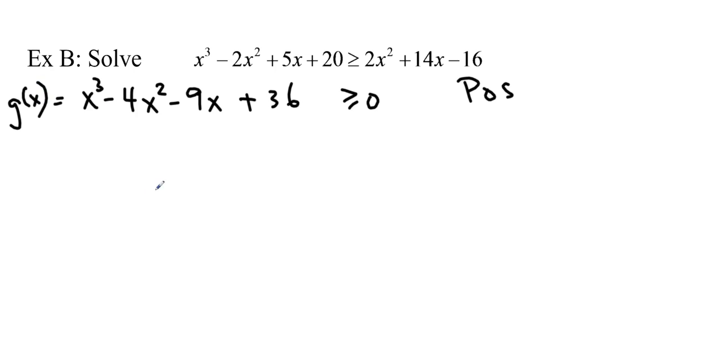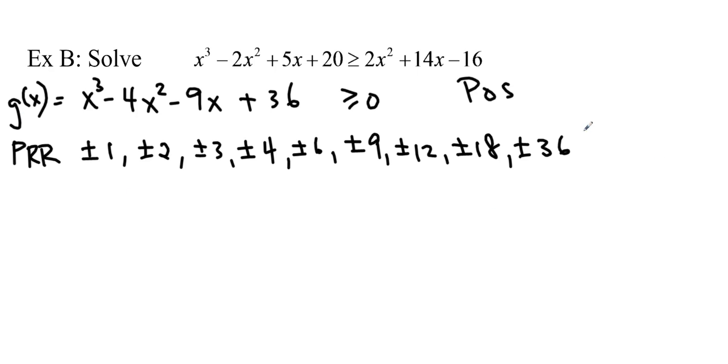We're going to write the PRR: ±1, ±2, ±3, ±4, ±6, ±9, ±12, ±18, ±36. So those are all the PRR. You can test them. g(1) is not equal to zero. You just test them all. I tested them before I started recording, so I know that g(3) is equal to zero.